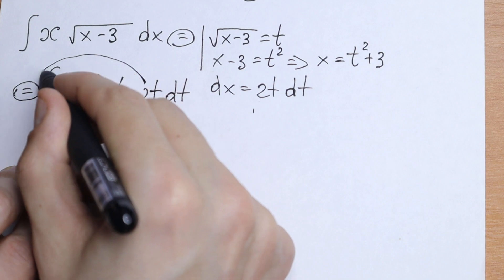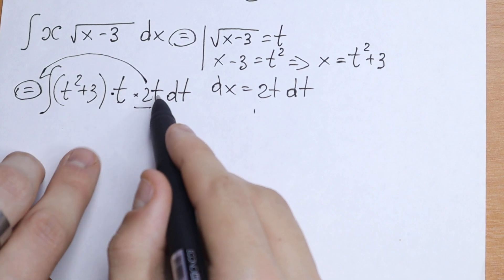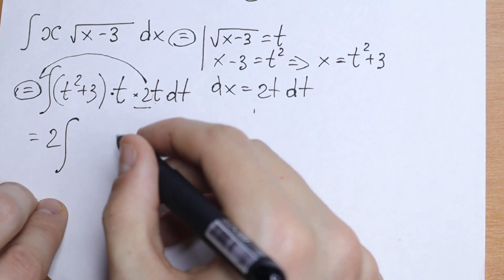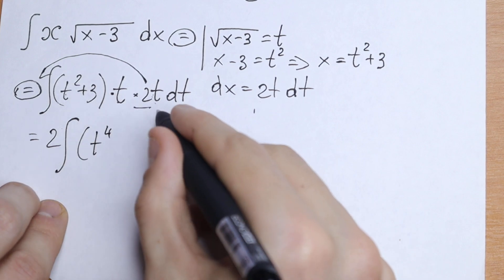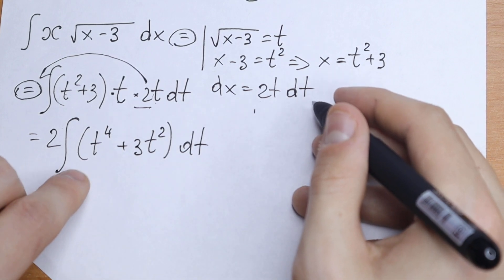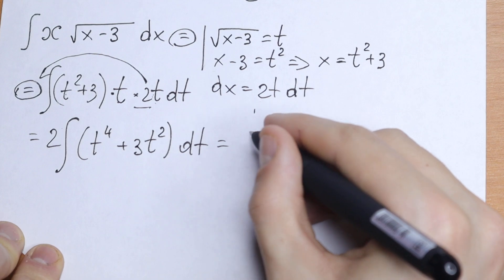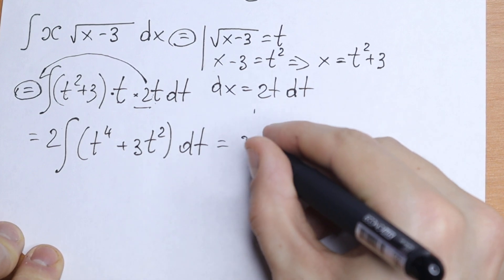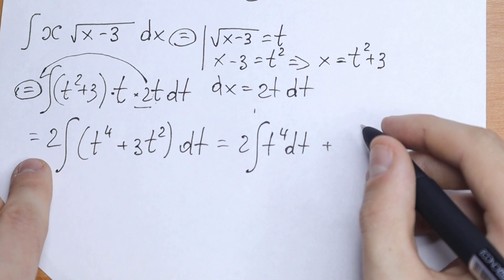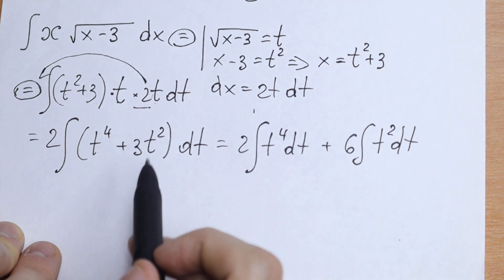Let's bring the constant 2 in front of the integral sign. Multiplying t times t gives t squared, and t squared times t squared gives t to the fourth power, while 3 times t squared gives 3t squared. We have a classic table case: the integral of a sum, giving us 2 times the integral of (t⁴ + 3t²) dt.